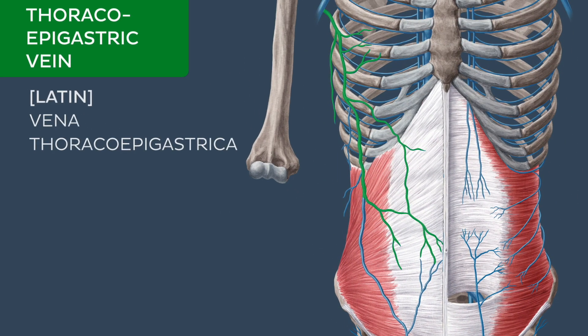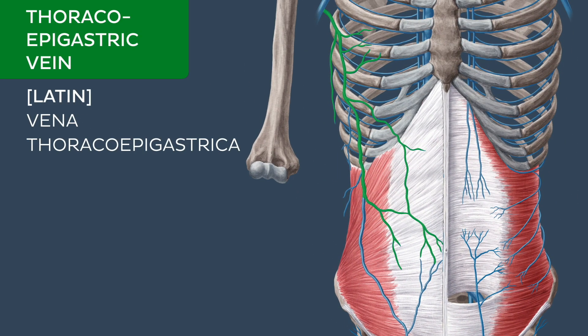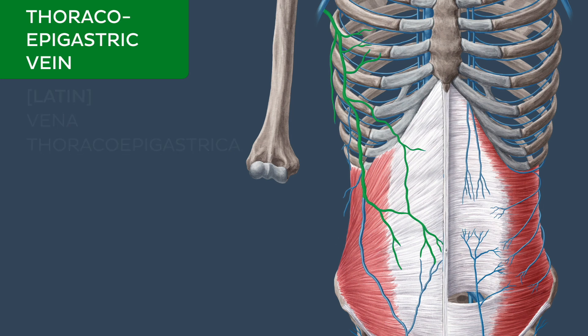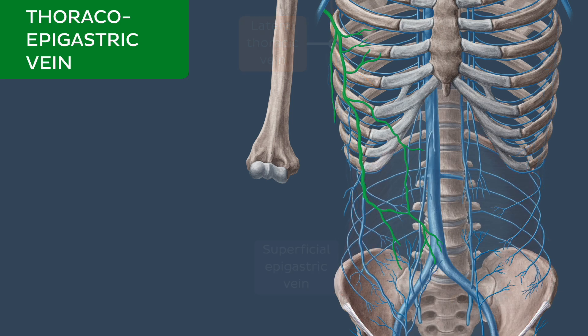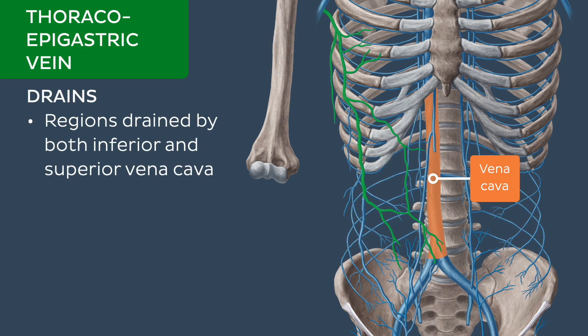The thoracoepigastric vein runs along the lateral aspect of the trunk between the lateral thoracic vein above and the superficial epigastric vein below. This vein functions to drain regions of the thoracic wall.